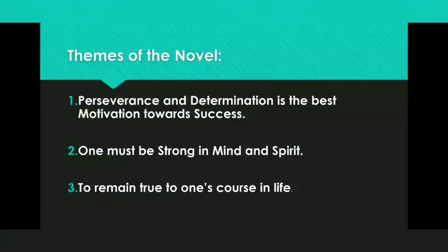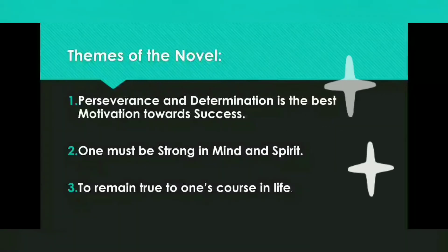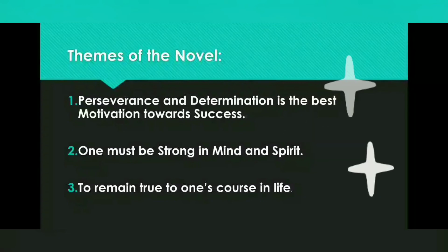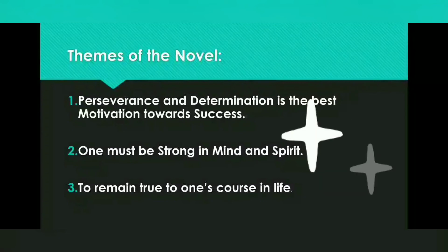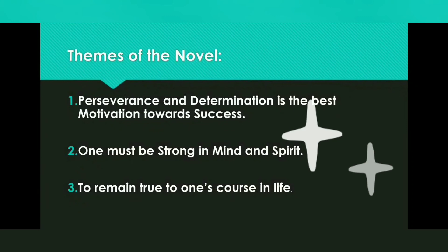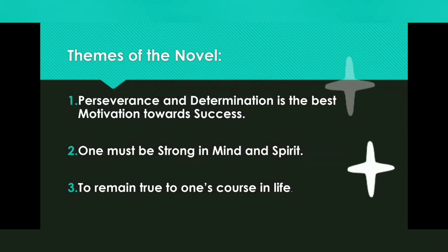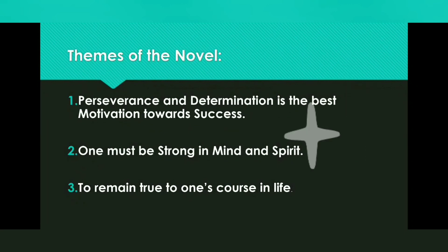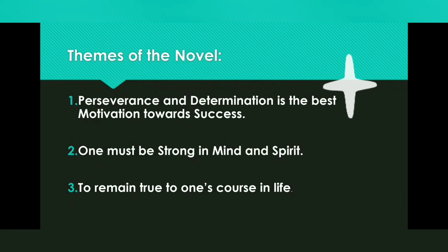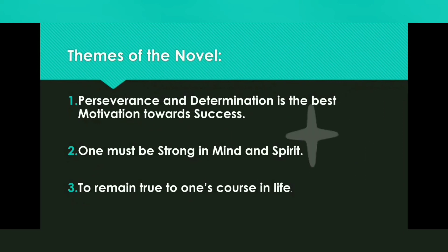Now let's see the themes of the novel. The first important theme is perseverance and determination as the best motivation towards success. Phileas Fogg is very determined and always puts in great effort in anything he does. His determination leads him to accept a bet to travel around the world in 80 days, and he shows perseverance throughout the novel by finishing what he has started no matter how difficult the obstacle.